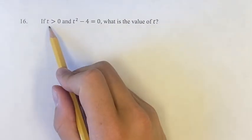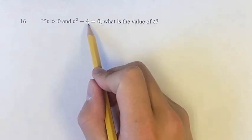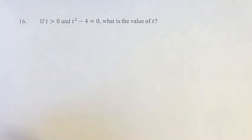In this problem, we're given that t is greater than 0, and t squared minus 4 is equal to 0. Given this information, we're asked, what is the value of t?